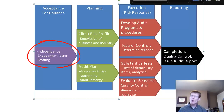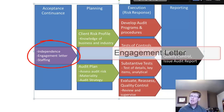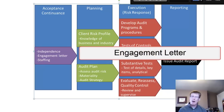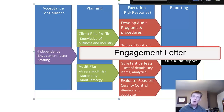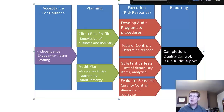We need to do our independence assessments by looking at the five threats to independence and the possible safeguards as discussed in the previous lesson. We will document the parameters of the engagement in what is called an engagement letter — a contract between the audit firm and the client that covers the scope of services, our fees, and the deliverables.